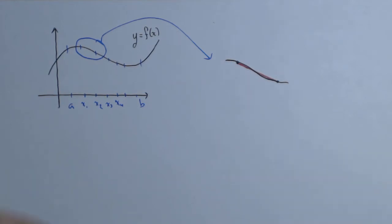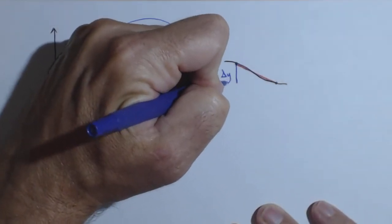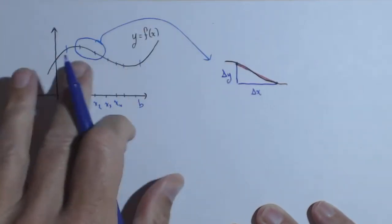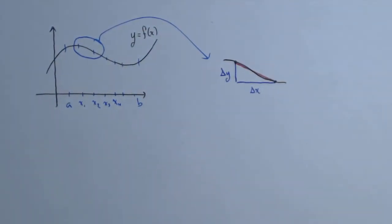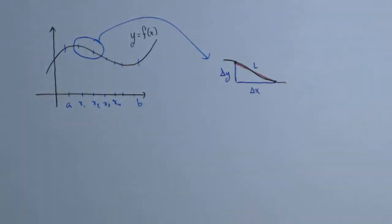Now, that straight line has a change in y and it has a change in x. And we would do this for each of these pieces. We're just going to look at one particular contribution. And what we want is the length of that curve.